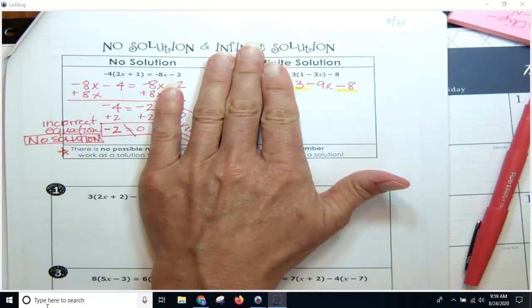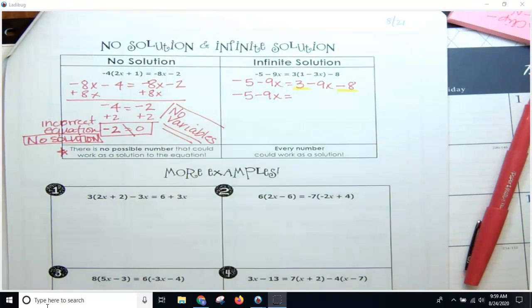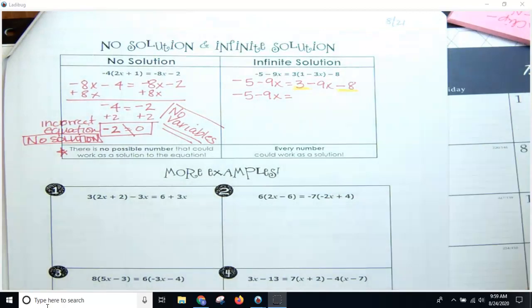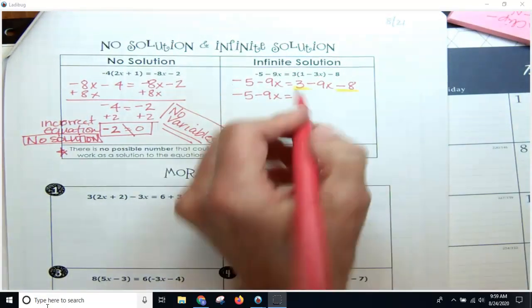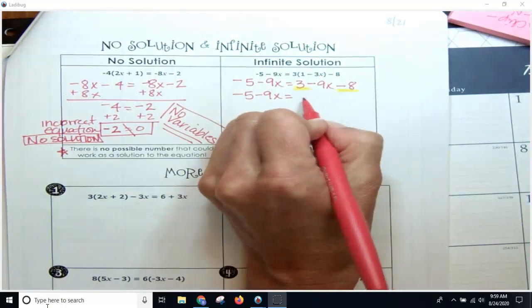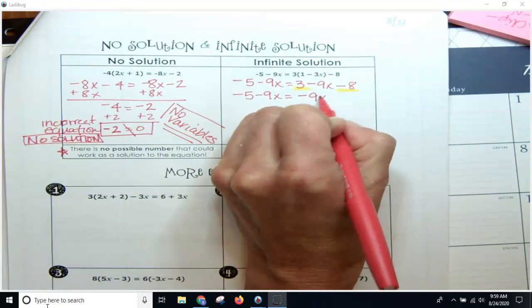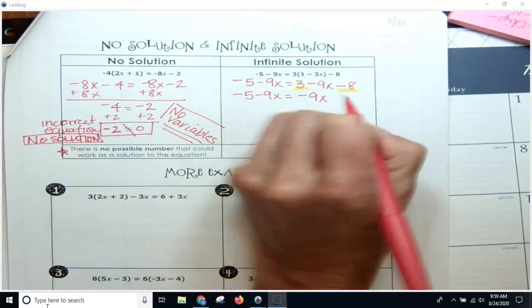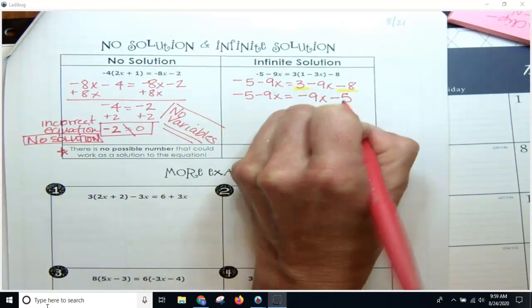Now keep in mind I'm not doing anything across equal signs, so I'm just simplifying. I'm not using my inverse operations; I'm combining my terms. So I've got negative 9x and then 3 minus 8 is negative 5.